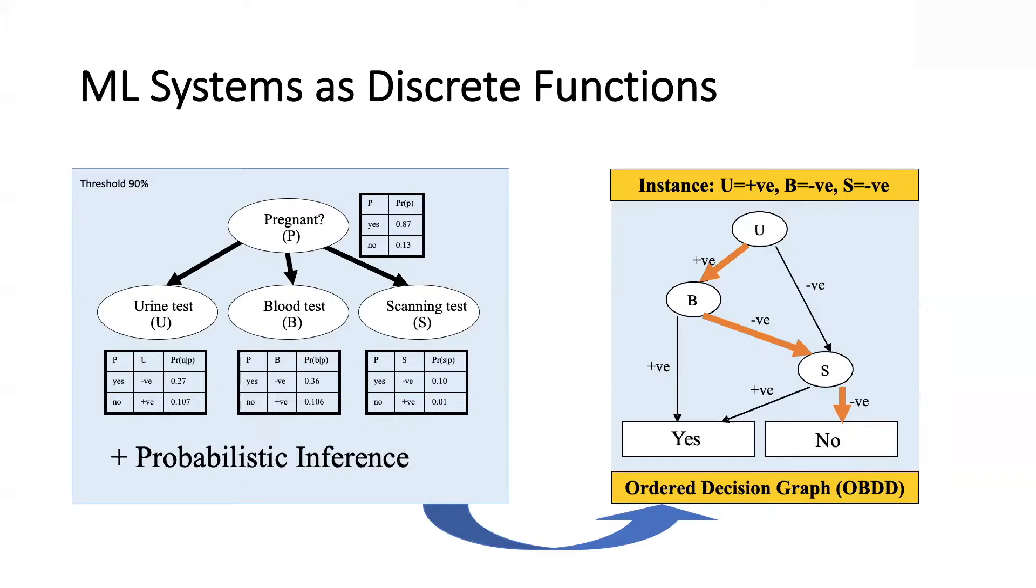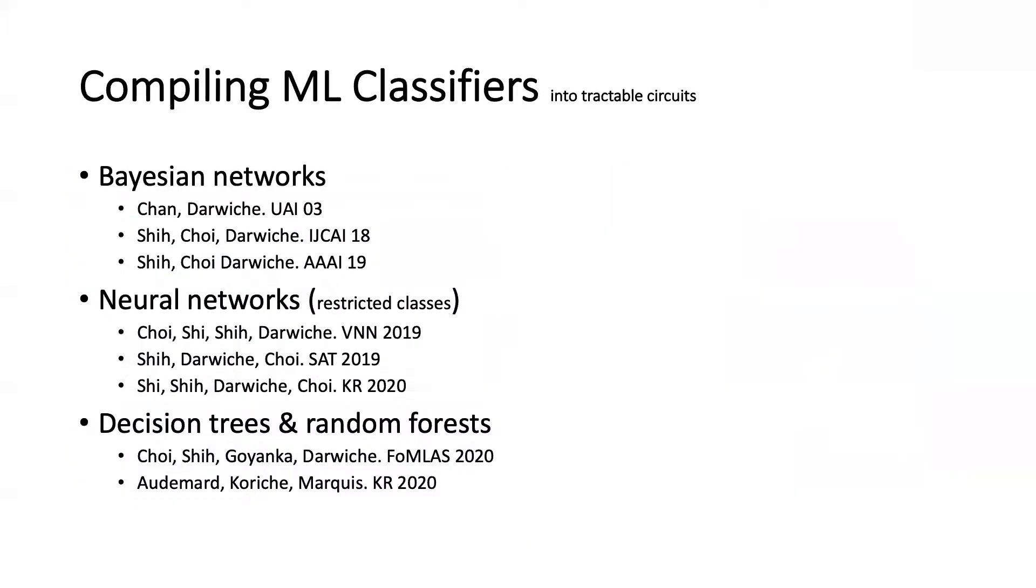And we're guaranteed that the system on the left and the system on the right will make the exact same decision on every instance. It doesn't have to be a decision graph, it could be another type of symbolic representation, and it's typically a tractable circuit representation. In fact, while this approach is pretty old, from about 17 years ago, over the last couple of years there have been a lot of work on this compilation idea, and the scope was expanded beyond Bayesian networks.